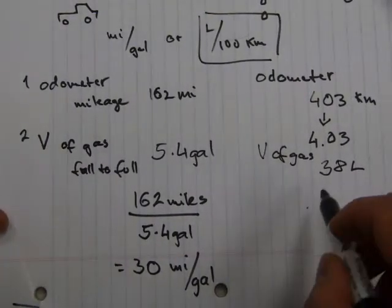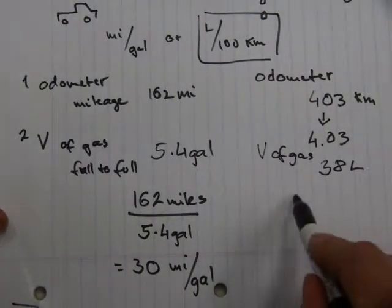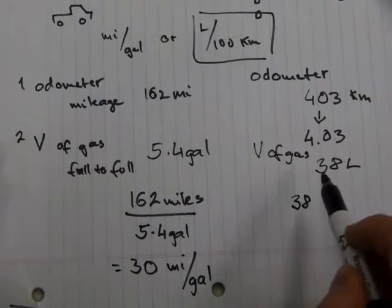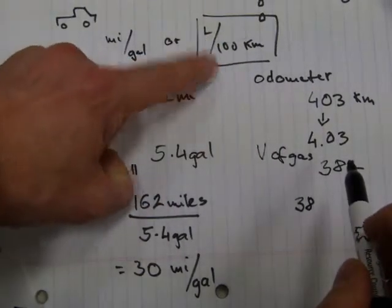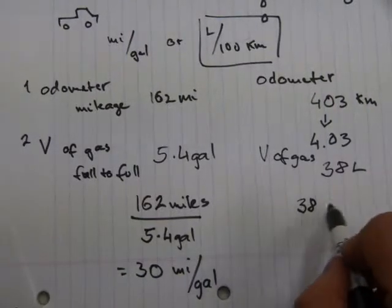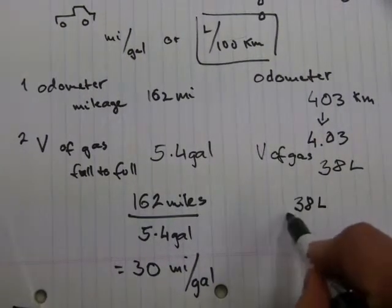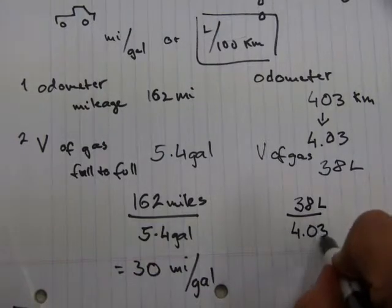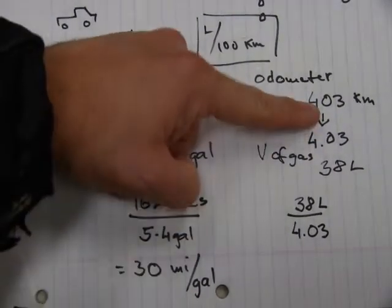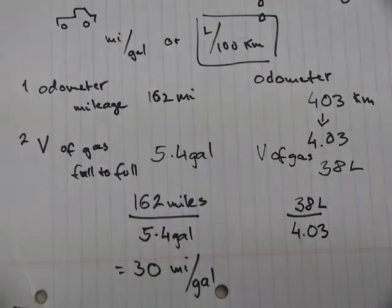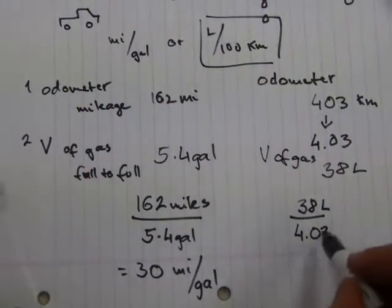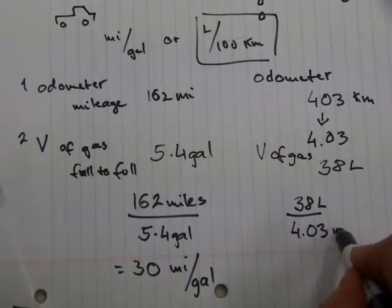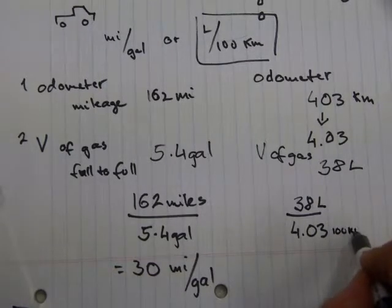And what you do is very simple. You do another division here. Because this one is expressed volume over distance, so you put the volume up top, 38 liters over 4.03. Because 403 kilometers is 4.03 hundred kilometers. So 4.03 hundred kilometers.